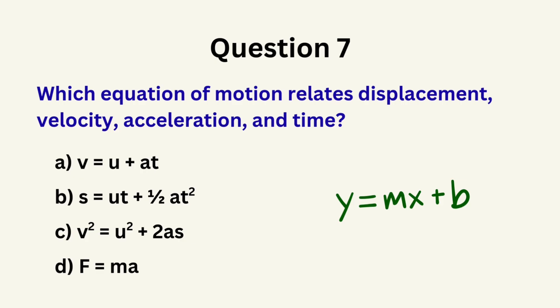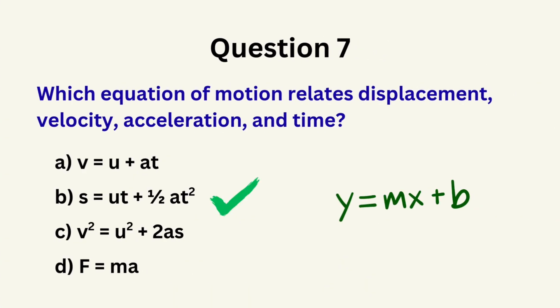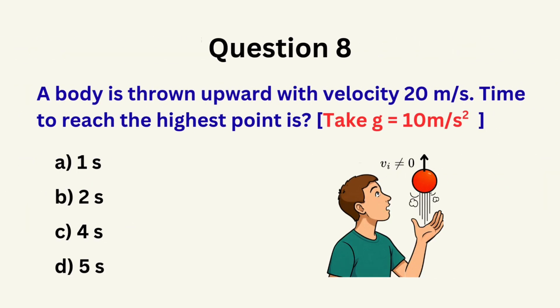Question 7: Which equation of motion relates displacement, velocity, acceleration, and time? A. v = u + at, B. s = ut + ½at², C. v² = u² + 2as, D. F = ma. The correct answer is B: s = ut + ½at².